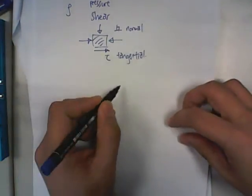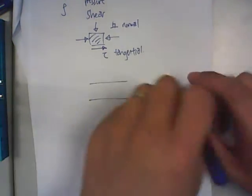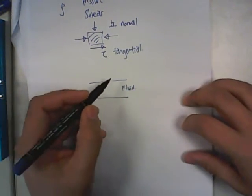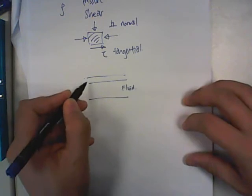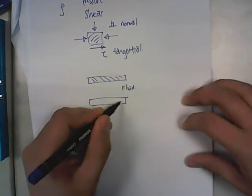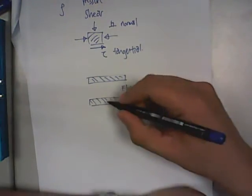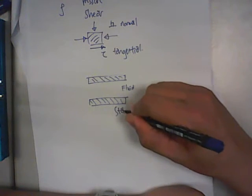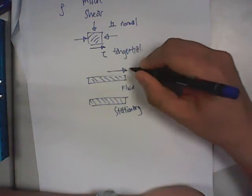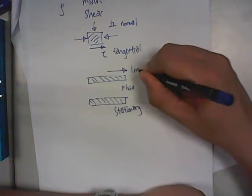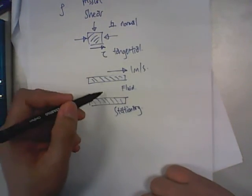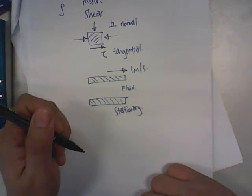Imagine that you have a layer of fluid between two surfaces. It can be oil, it can be water. One surface at the top and the other one below. One is stationary at the bottom and the top is moving at a speed, let's say 1 meter per second.